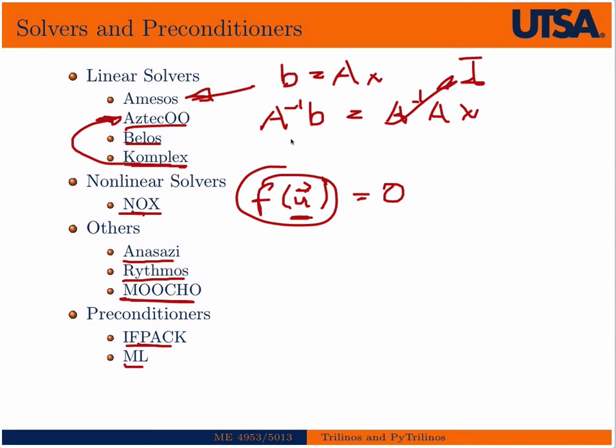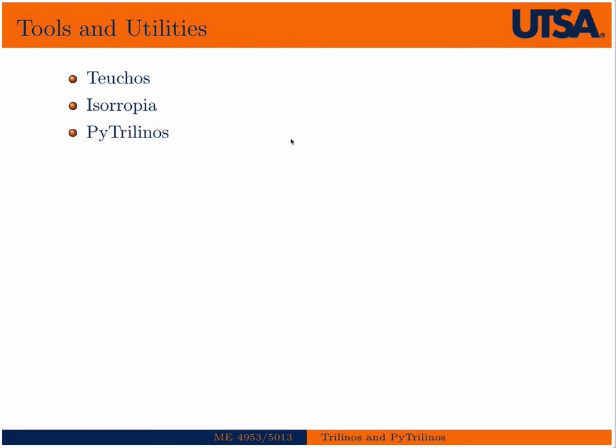And then there's also preconditioners like IFPACK and ML. These can, when we go back to talk about interoperability, while any of these solvers can be used on their own to solve a system of equations, we could also use the interoperability of the packages, say AztecOO and IFPACK, to first precondition a matrix before we send it to an iterative solver such that we can get a faster solution. ML is a multi-grid or multi-level preconditioner.